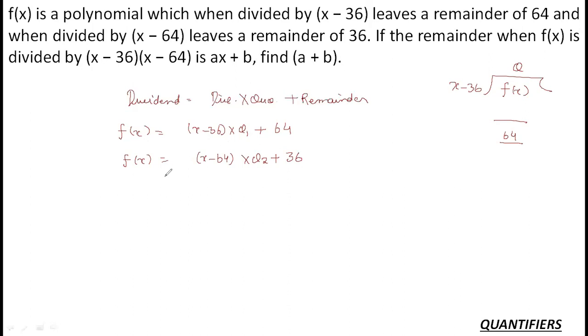Now I am asked what will be the remainder when it is divided by x-36 into x-64. So when the same is divided by (x-36)(x-64), there will be some quotient q3 and there is some remainder. Here they have given us the remainder is ax+b. Even if it was not given, you will always suppose your default remainder to be ax+b.